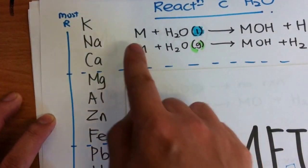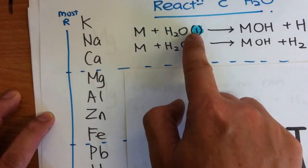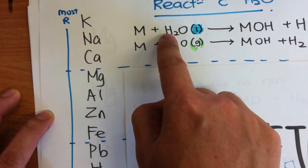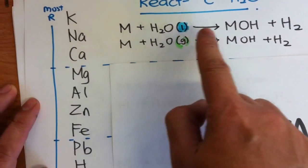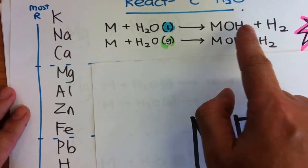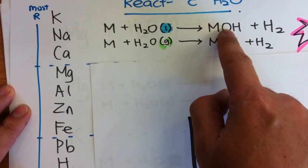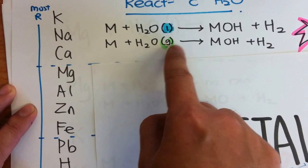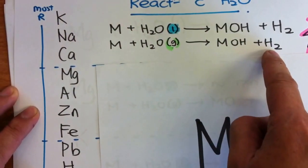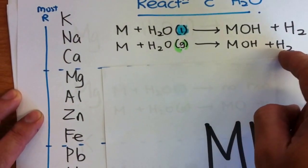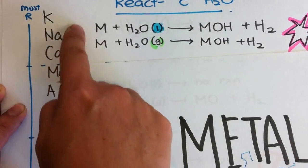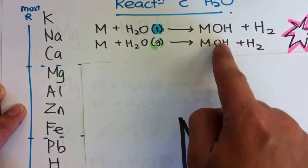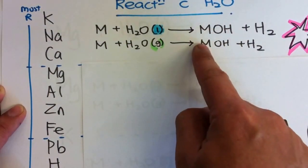Now the first group of metals, when they react with liquid water, which is just pure water, what you will get is MOH, a metal hydroxide and hydrogen gas. When they react with steam, you also get this metal hydroxide and hydrogen gas. But because they are in group one, they are alkaline, you will get an alkaline metal. Alkaline is formed.